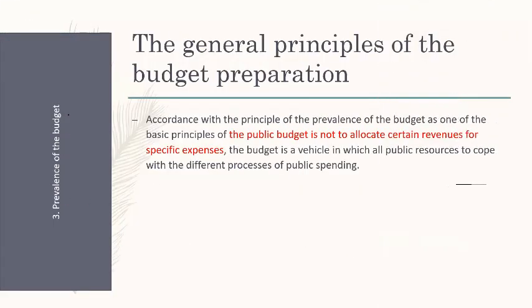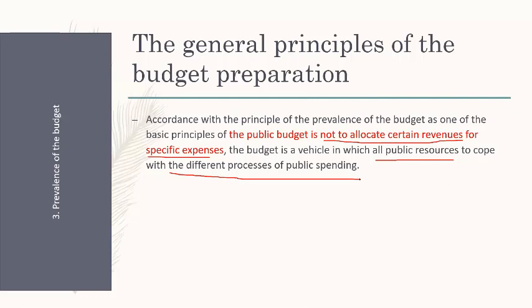The third principle is the prevalence of the budget. In accordance with this principle, one of the basic principles of the public budget is not to allocate certain revenue for specific expenses. The budget is the vehicle in which all public resources cope with different processes of public spending. We accumulate all revenues and expenditures into one central account for the government, and the responsible ministry then allocates resources based on priorities and needs — not making privilege for specific entities over others.